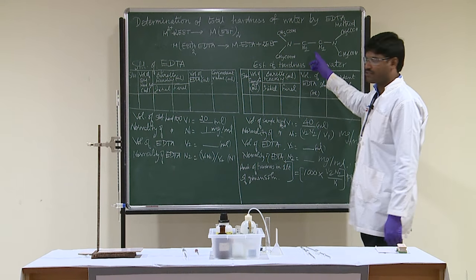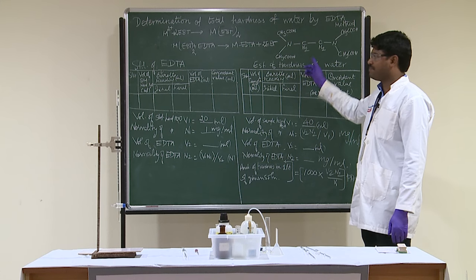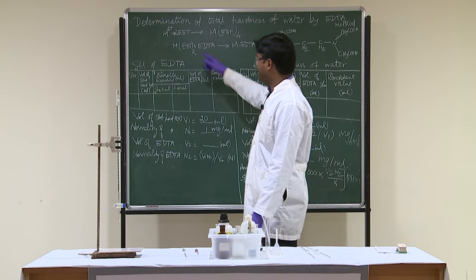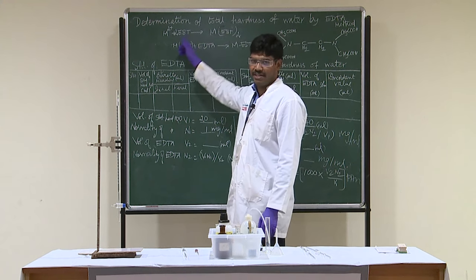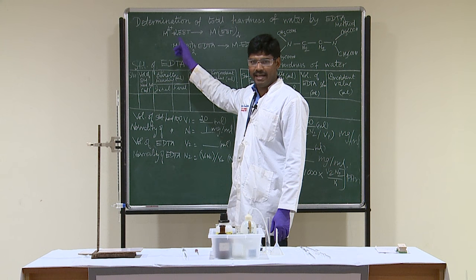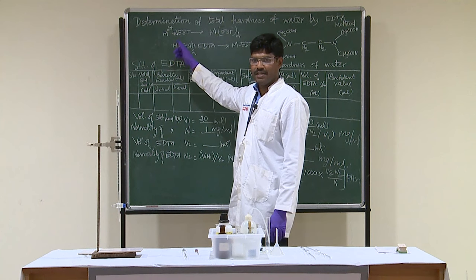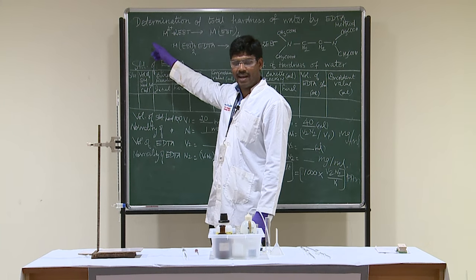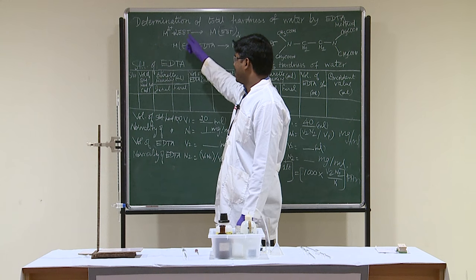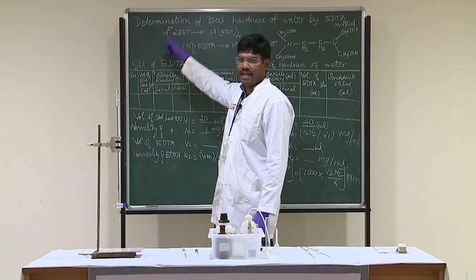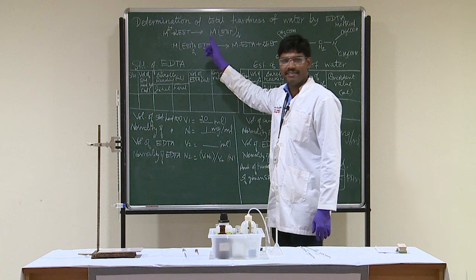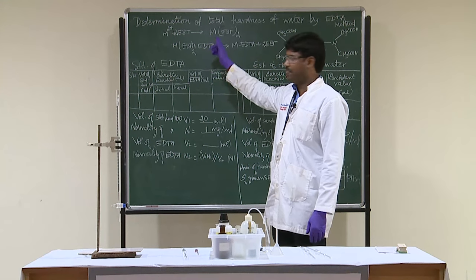Here is the structure of EDTA. In this experiment, when we introduce the EBT — Eriochrome Black T — as an indicator, there will normally be divalent cations in the water. The EBT reacts with the divalent cations and forms a complex called M-EBT.